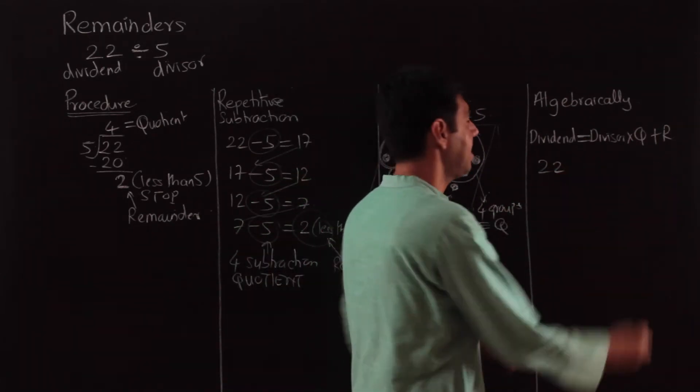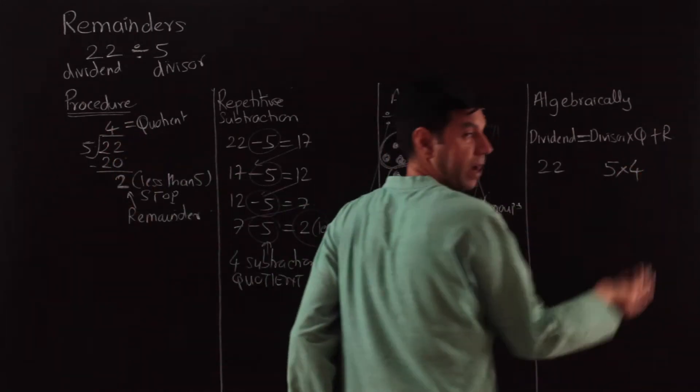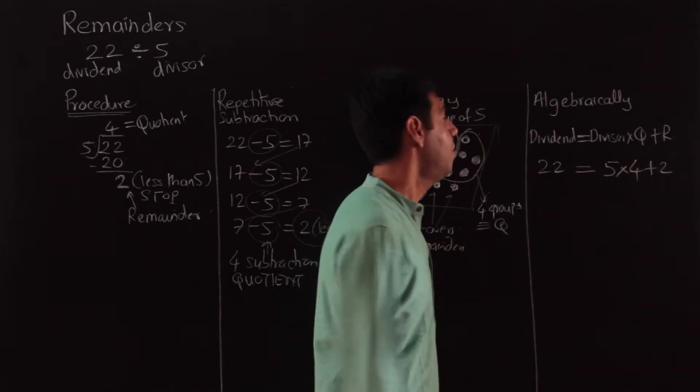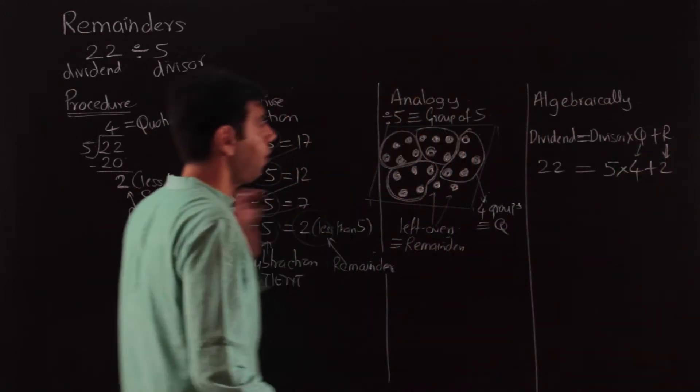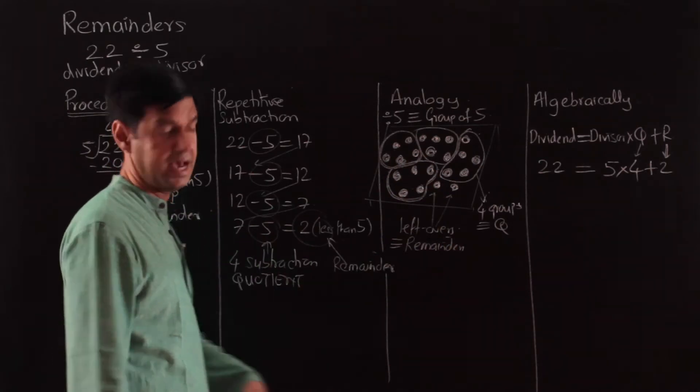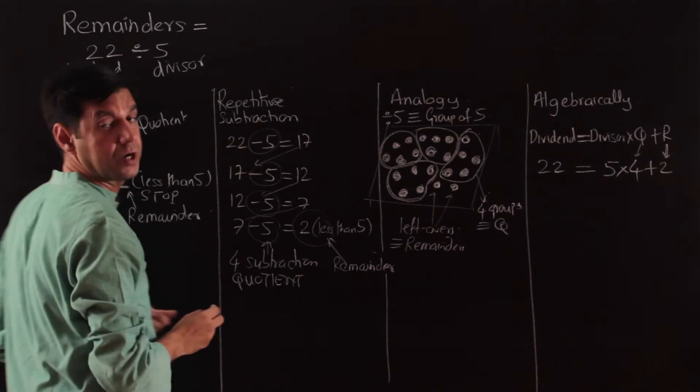So I do 5 × 4, that's 20, plus 2. Now they're both equal: 22. So this is my remainder that I'm searching for, this is my quotient. If you understood this properly—especially the repetitive subtraction and the analogy part—you'll realize that remainders are the leftovers.